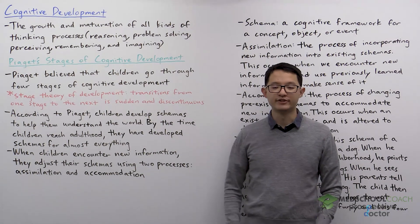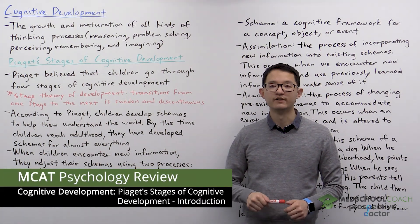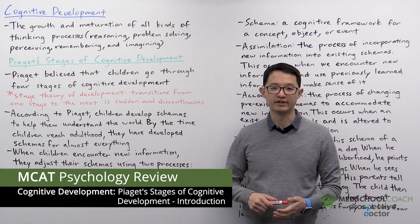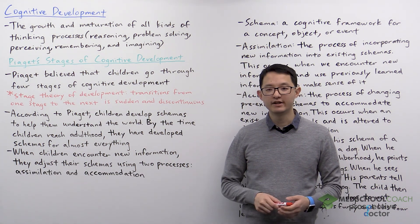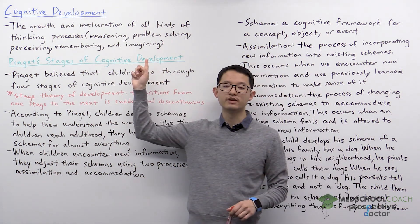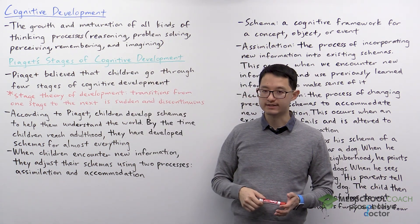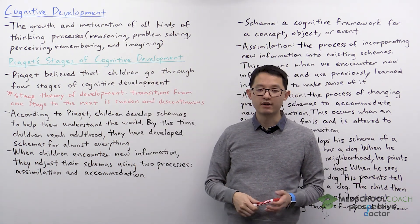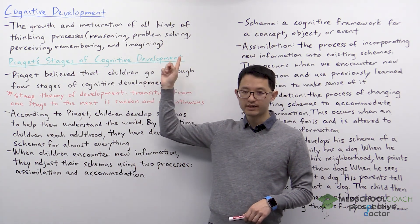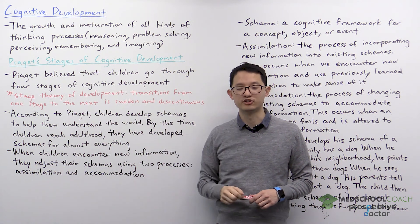In the next few videos we're going to go over cognitive development, focusing specifically on Piaget's stages of cognitive development. To begin, we can define cognitive development as the growth and maturation of all kinds of thinking processes. These processes can include reasoning, problem-solving, perceiving, remembering, and imagining.